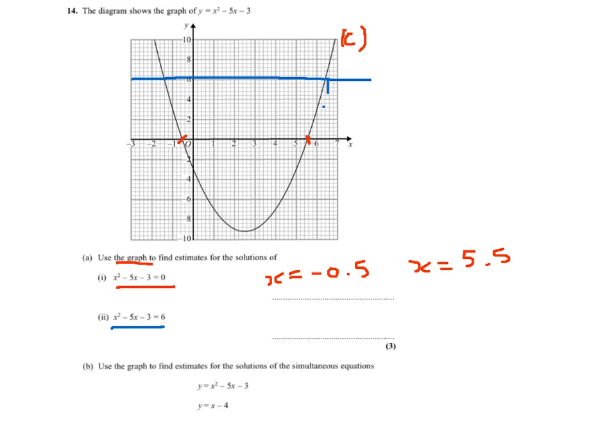Again, I need to read this point and this point. The first one is x equals minus 1.4 and x equals 6.4.